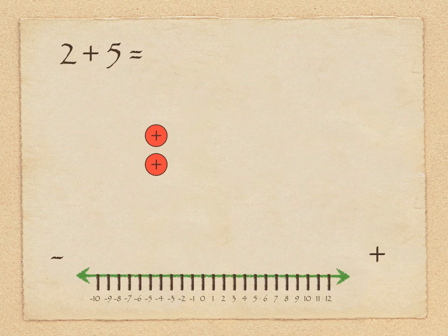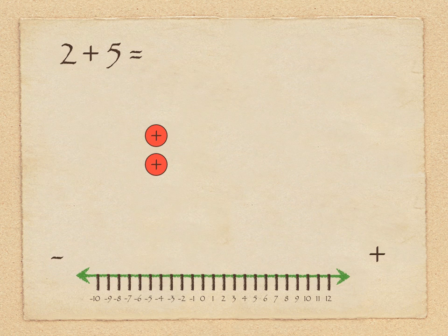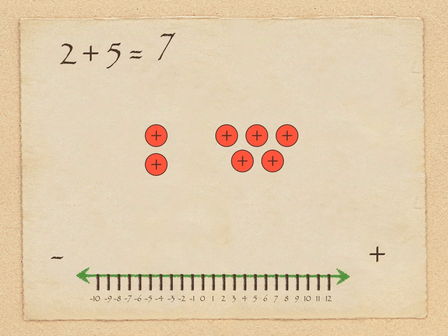So we have 2 plus 5, and we're going to show that two different ways — using counters and on a number line. We're showing two positive counters, and I'm going to use red for positive because I associate it with hot, and blue counters for negative, which we can associate with cold. So we're starting with two red counters and we're going to add in five additional counters, which shows that 2 plus 5 is 7.